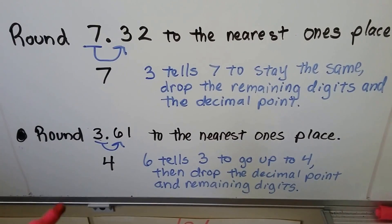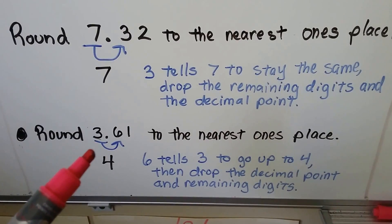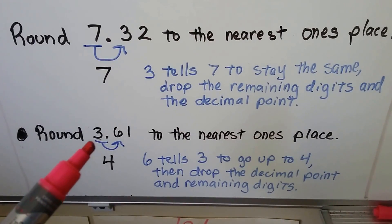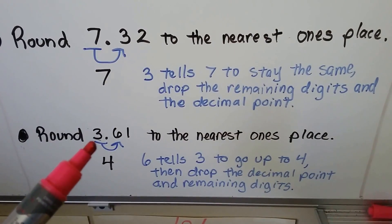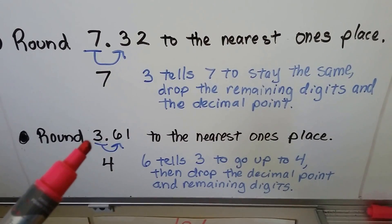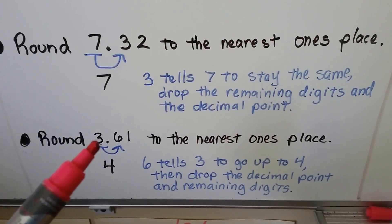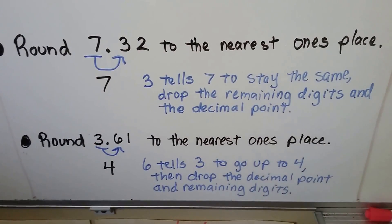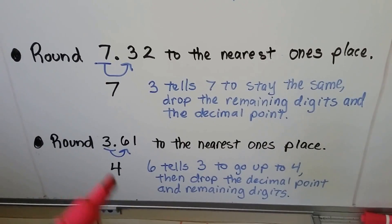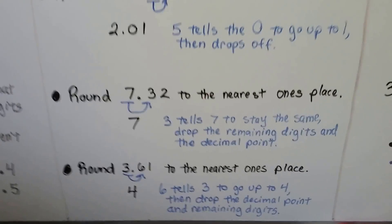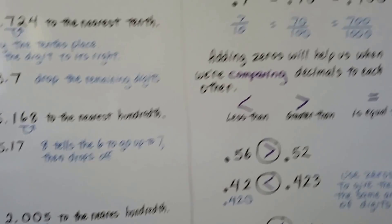So think of it as: if you had $3.61 and you needed to round it to the nearest dollars place, that's closer to $4 than it is to $3. Thinking of it as money can help you. Whatever helps you succeed.